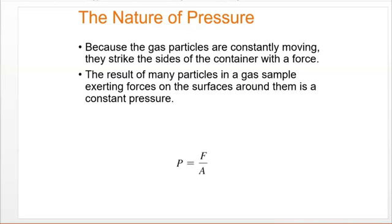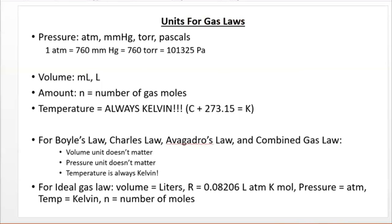So we have this new variable called pressure. Pressure is force per unit area, but we look at pressure in a different way using our equations, our gas laws, PV equals NRT, and our combined gas law, which we'll cover in a minute. So the units for pressure, we have atm, mmHg, Torr, and Pascal. Here's the conversions for all of them. Volume, milliliters and liters, we've seen that before. The amount is N, is the number of gas moles. The temperature is always Kelvin, always convert your Celsius temperatures to Kelvin.